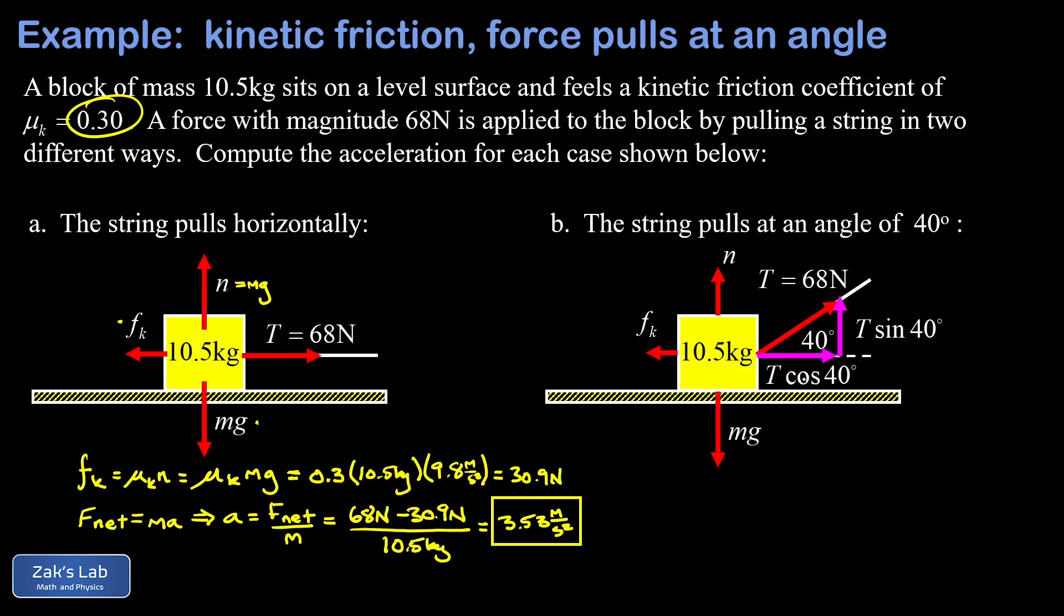Again, we want to find the kinetic friction force and we know that's related to the normal force. We kind of have to start by getting that normal force nailed down. To do this, we have to look at a force analysis in the vertical direction. We know the normal force will do whatever it has to to guarantee that our net force vertically is zero to keep the block constrained to the surface. This time we have three vertical forces acting on our block.